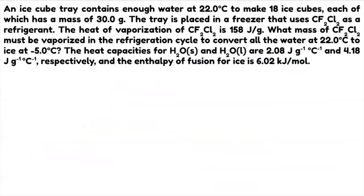An ice cube tray contains enough water at 22 degrees Celsius to make 18 cubes, each with a mass of 30 grams. The tray is placed in a freezer that uses dichlorodifluoromethane as a refrigerant. The heat of vaporization of CF₂Cl₂ is 158 joules per gram. What mass of CF₂Cl₂ must be vaporized to convert all the water at 22 degrees Celsius to ice at negative 5.0 degrees Celsius? Heat capacities for H₂O solid and H₂O liquid are 2.08 and 4.18 joules per gram degree Celsius, respectively, and the enthalpy of fusion for ice is 6.02 kilojoules per mole.